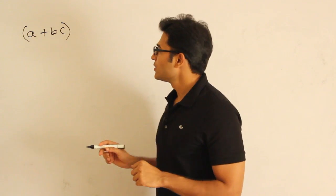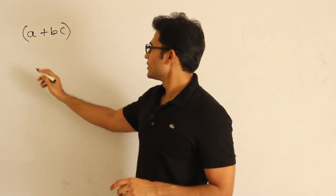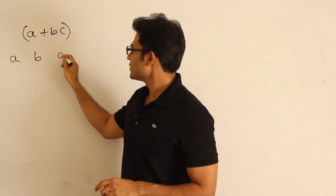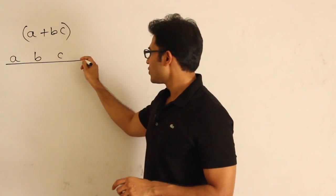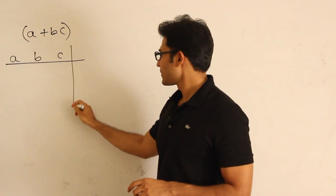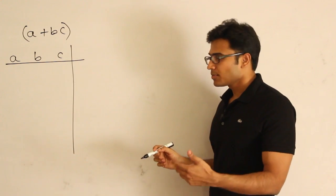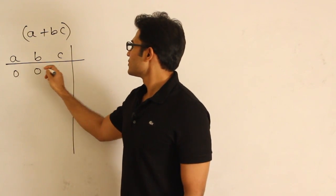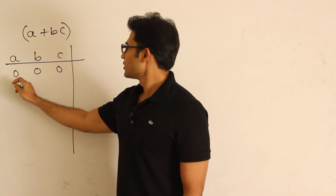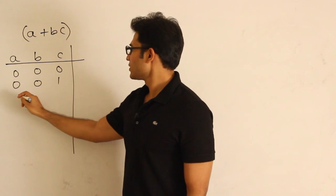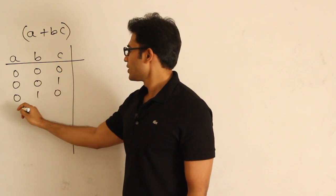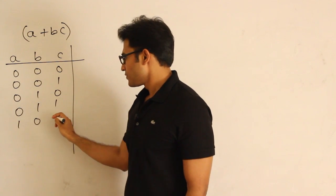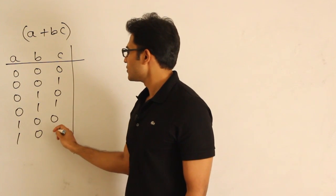This expression takes all the possible values of a, b and c. If each variable can take 0 or 1, then what are all the possible values for a, b, c? They are: 0,0,0 / 0,0,1 / 0,1,0 / 1,0,0 and so on - I am just writing all the possibilities. So these all form the set of all inputs.